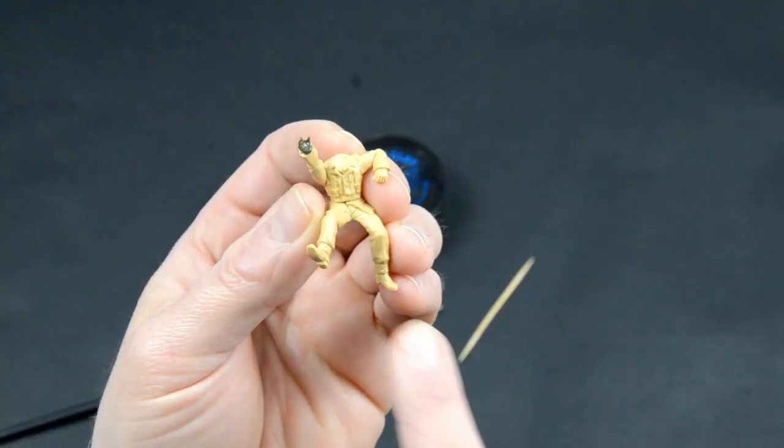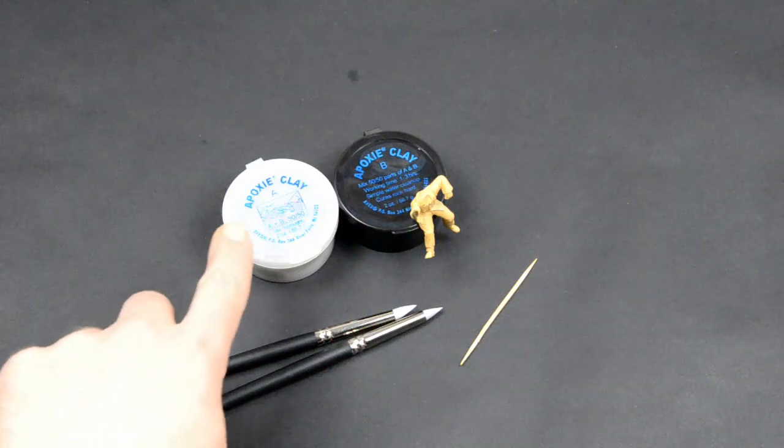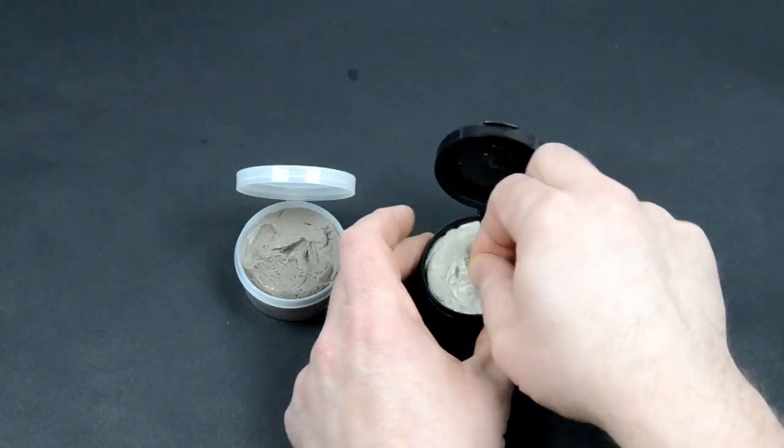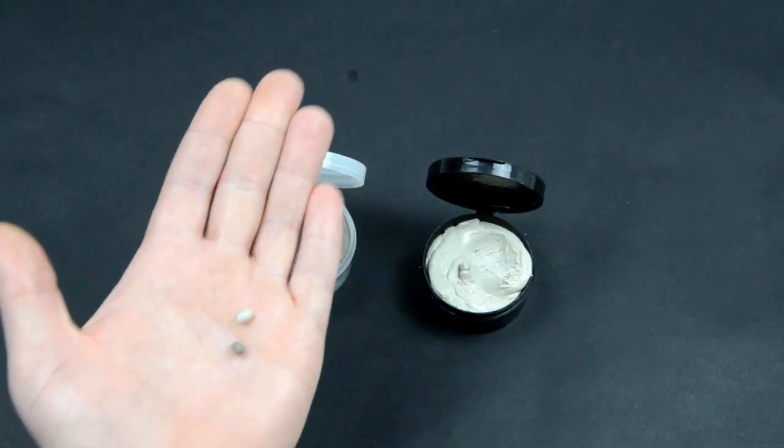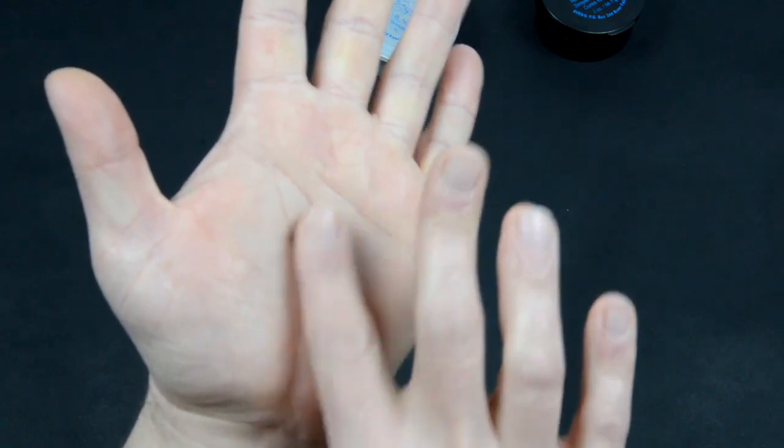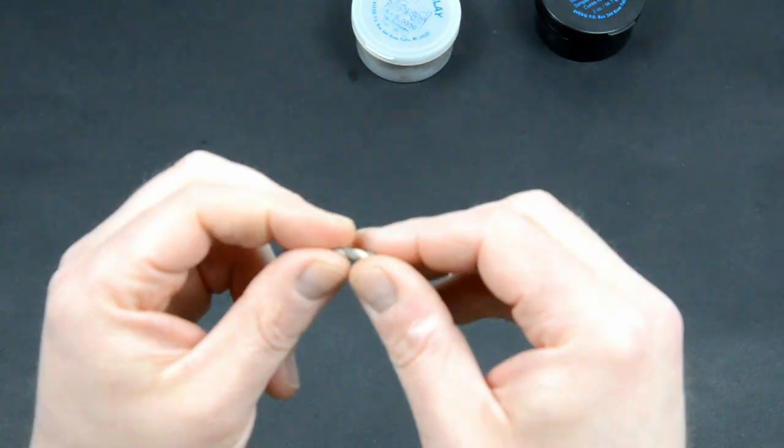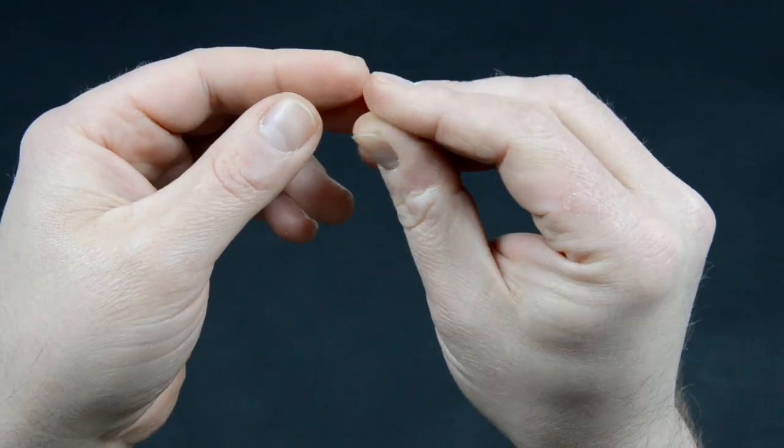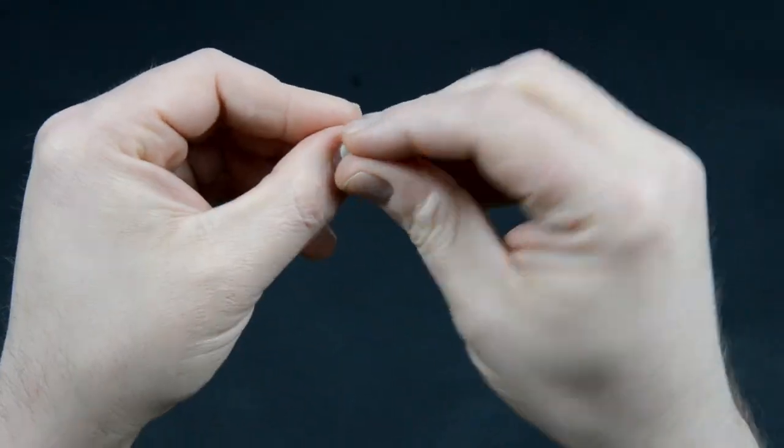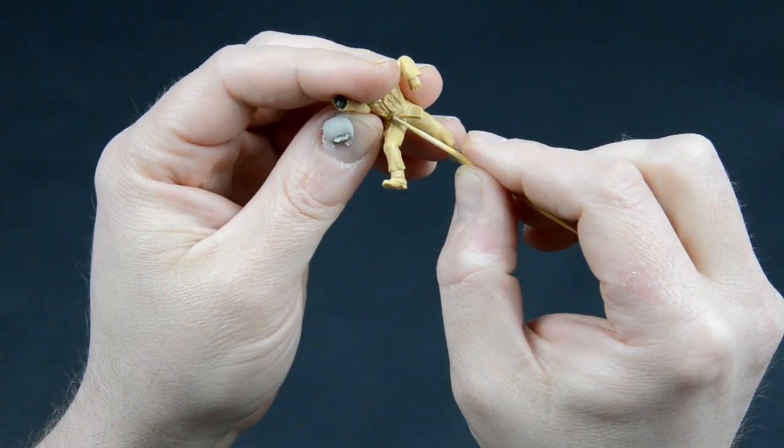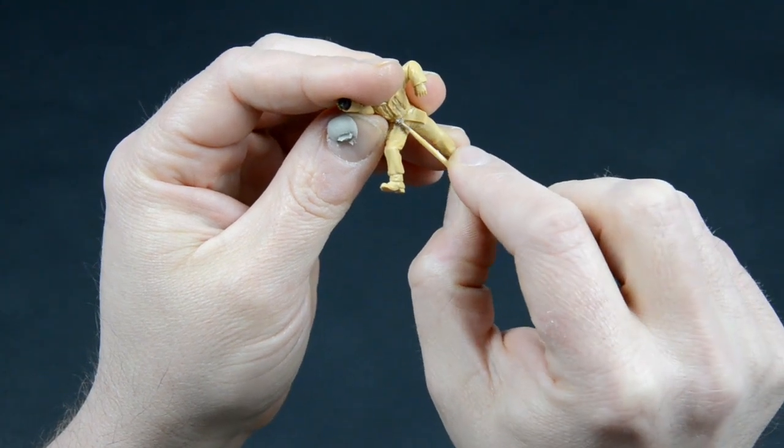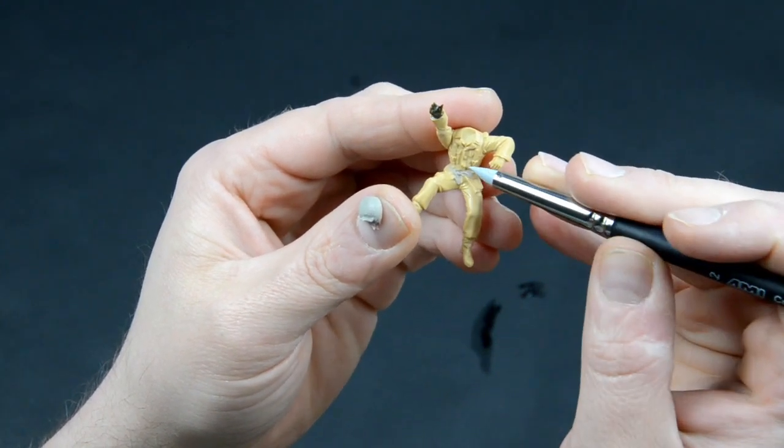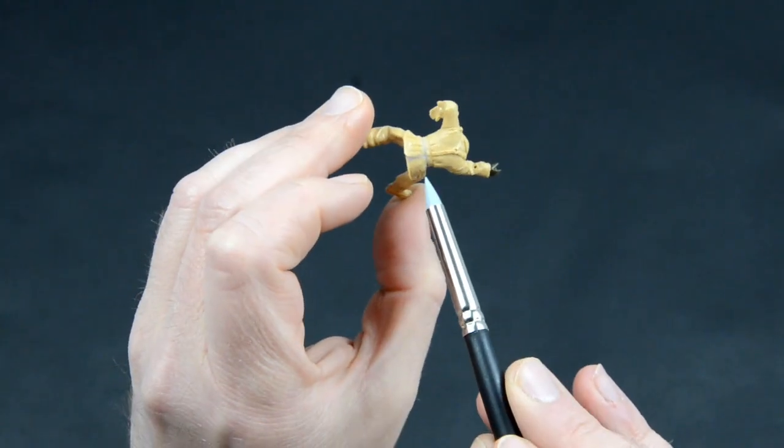Now we have some holes to fill here. We will use some Aves epoxy clay, some silicone brushes, a toothpick, and some water or saliva from your mouth. Let's mix some clay. Take two equal parts of each component, make two small worms, twist the worms together, and then knead everything until the color is uniform. Put the ball on your finger, take a small amount with a toothpick, and push it in the crevices. For smoothing, wet the silicone brush with some water and go over the part you want to smooth out. Here you can see that we have filled all the crevices.